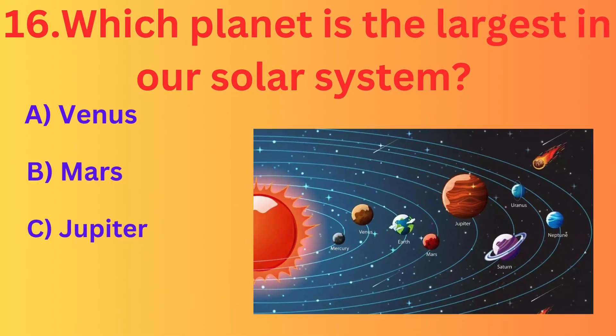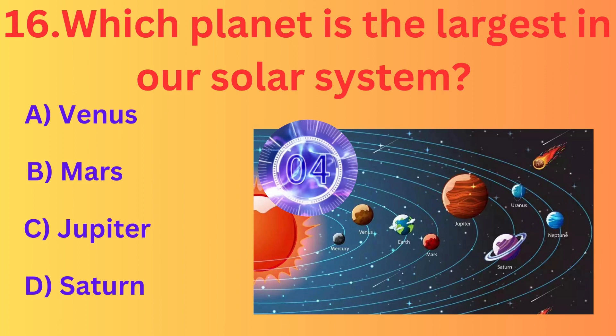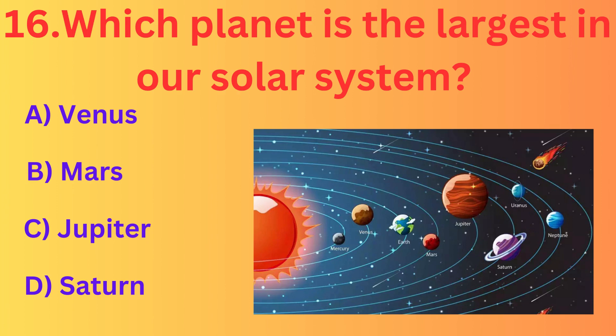Which planet is the largest in our solar system? The correct answer is option C, Jupiter.